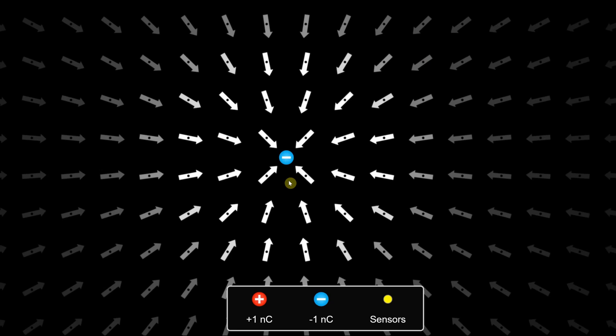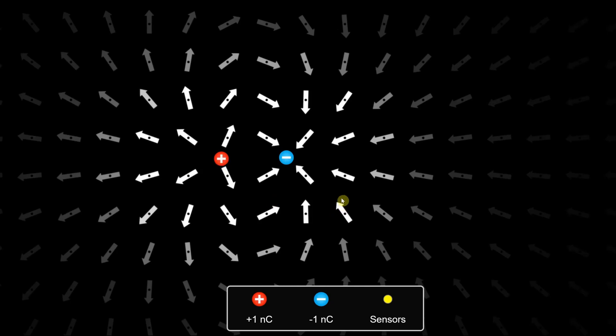The electric field, by definition, points towards negatives and away from positives. If I add a positive charge to this plane, then the field's made up of the sum of the positive charge and the negative charge contributions. So you can see here, the field is pointing away from the positive and towards the negative.